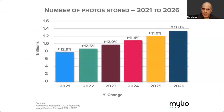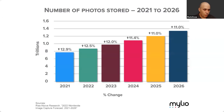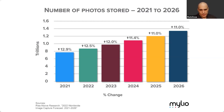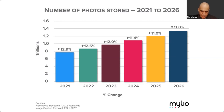The number of photos we have to keep track of just keeps growing at an incredible rate. Over the next five years, the number of photos stored is expected to go from about seven and a half trillion up to almost 1.4 trillion, which effectively doubles the amount of pictures that need to be organized.